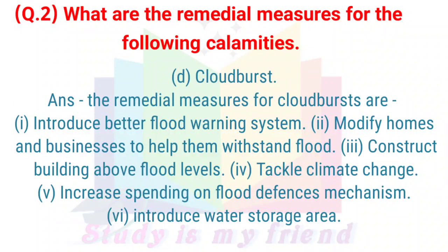D) Cloudburst. Answer: The remedial measures for cloudburst are: 1. Introduce a better flood warning system. 2. Modify homes and businesses to help them withstand floods. 3. Construct buildings above flood levels. 4. Track climate change. 5. Increase spending on flood defence mechanisms. 6. Introduce water storage areas.